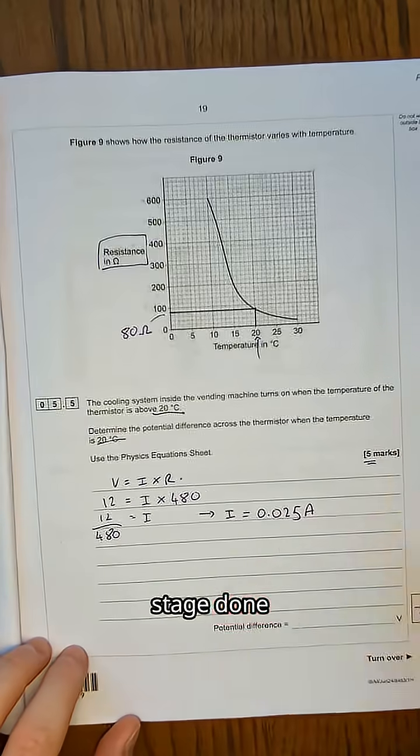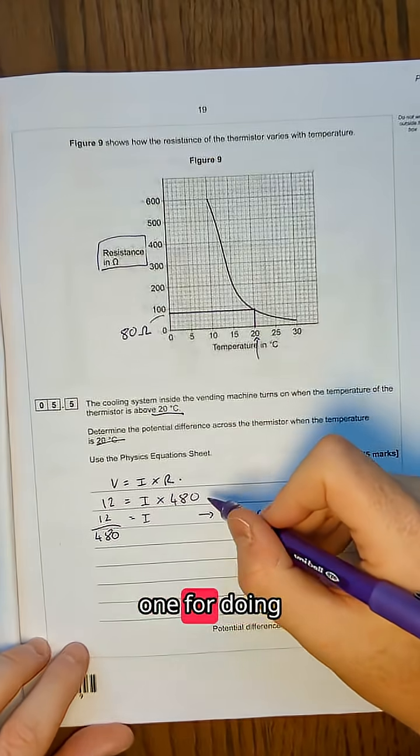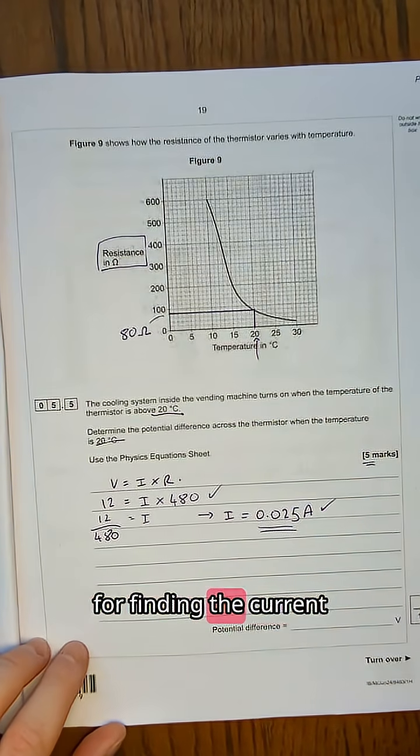So that's my first stage done for this question. I've been able to find the current in the whole circuit. I've got probably about three marks: one for doing the graph properly, one for subbing my values, and one for finding the current.